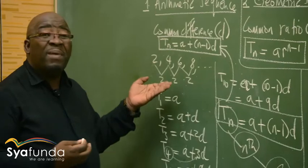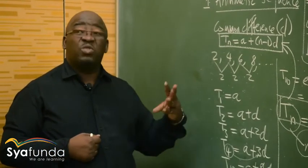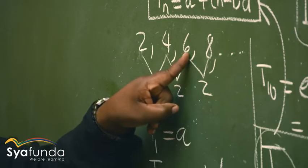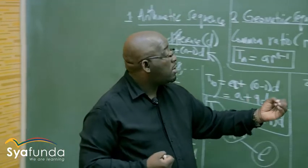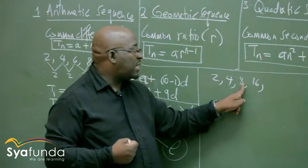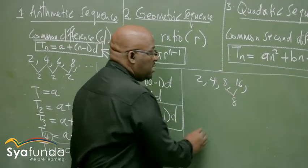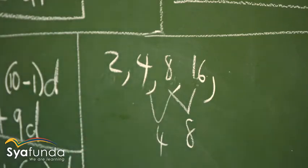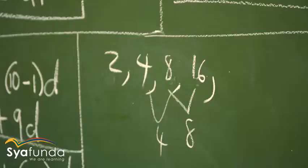On the arithmetic sequence, we said it had a common difference — we checked it: 8 − 6 = 2, 6 − 4 = 2, 4 − 2 = 2. Can we get the same thing here? 16 − 8 = 8, but 8 − 4 = 4. It's not the same, so it's not common. It must be the same for us to call it a common difference. So this sequence doesn't have a common difference.